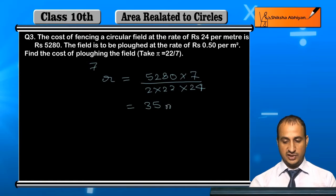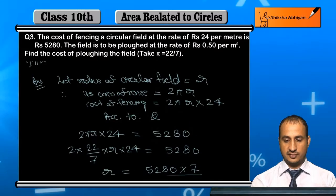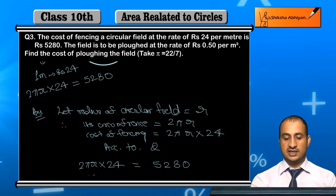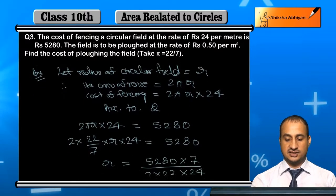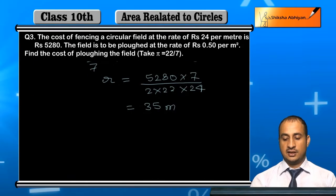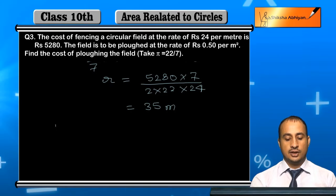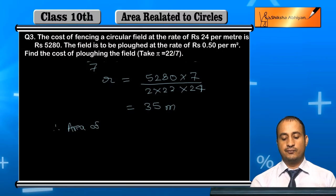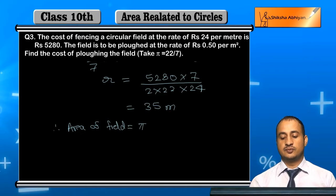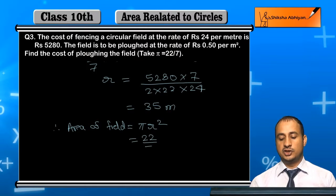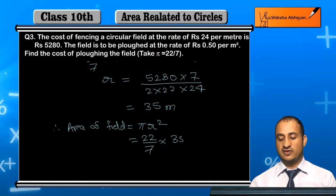This is in meters, so the radius is 35 meters. Therefore, the area of the field = πr² = (22/7) × 35 × 35.